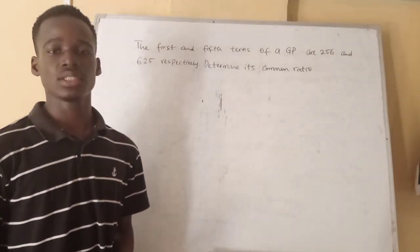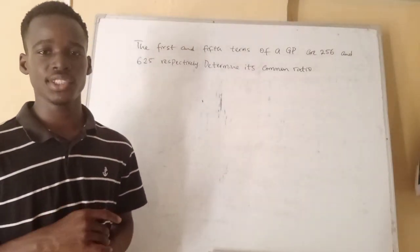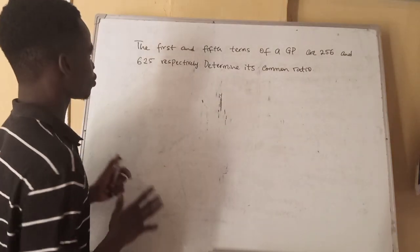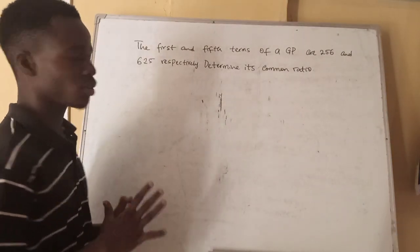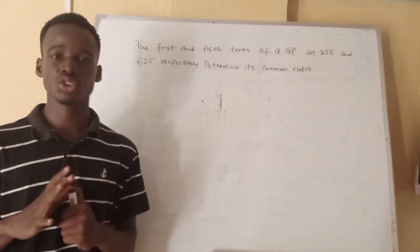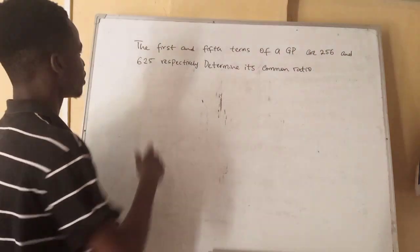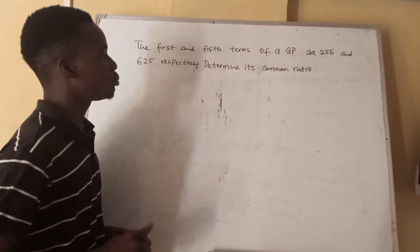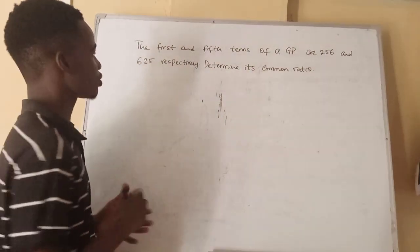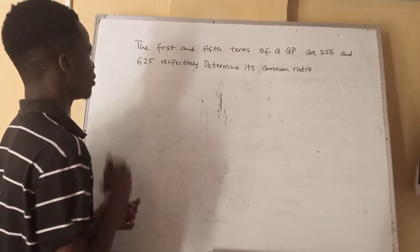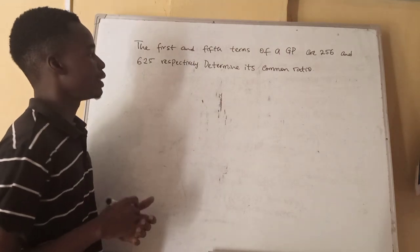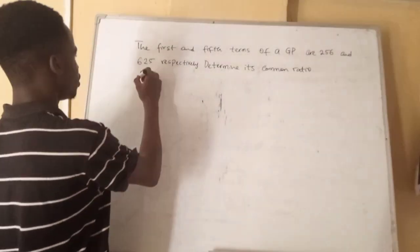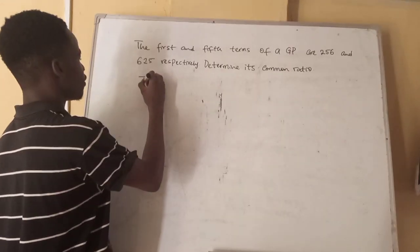Hello, welcome to your academy. In this series of solving test questions, today in this video we will be solving questions on GP. Let's get right started. The first and fifth terms of a GP are 256 and 625 respectively. Determine its common ratio.